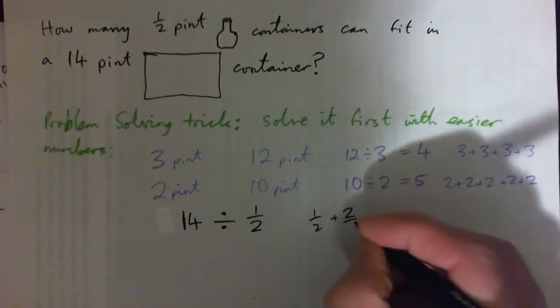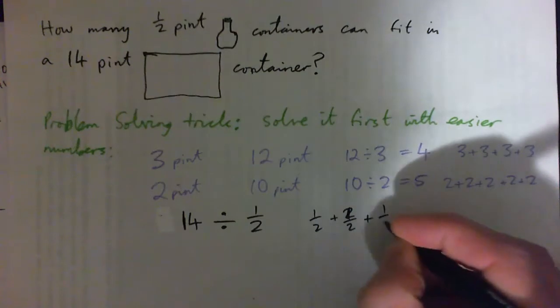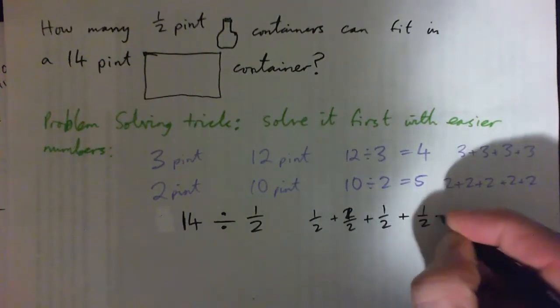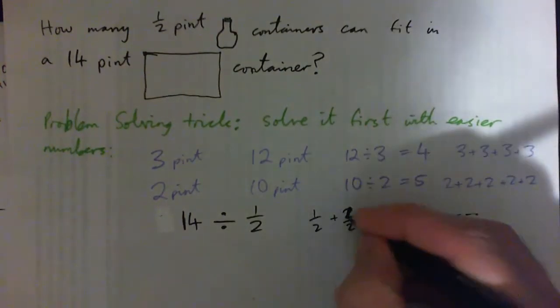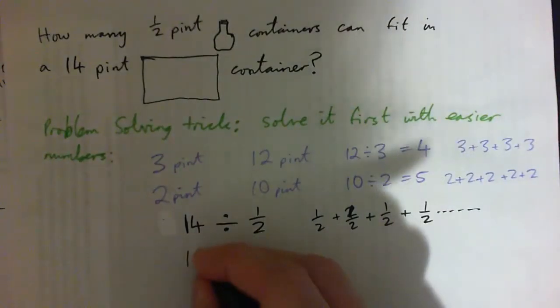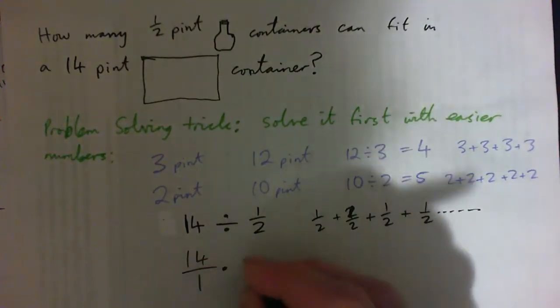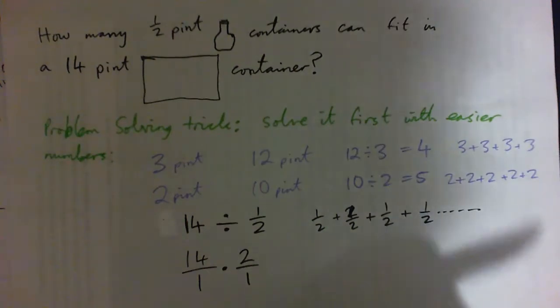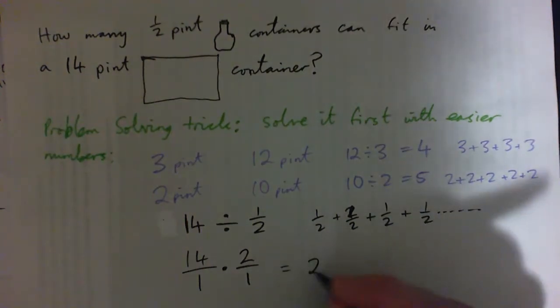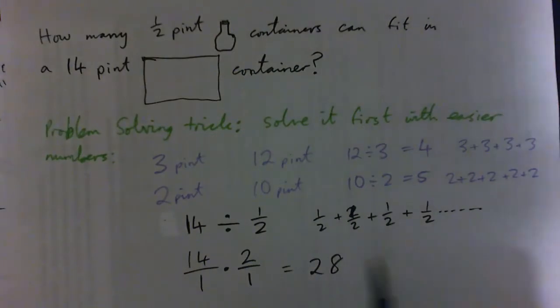To divide, you go 14 over 1 times the reciprocal, 2 over 1. 14 times 2—that's 28.